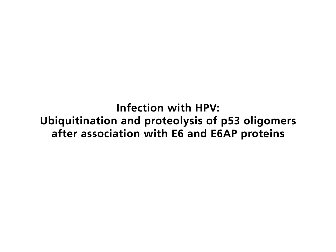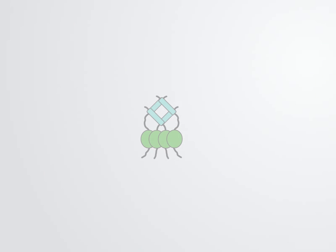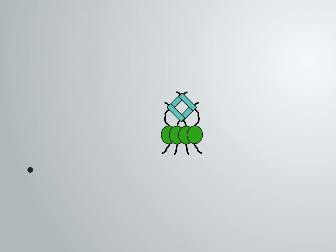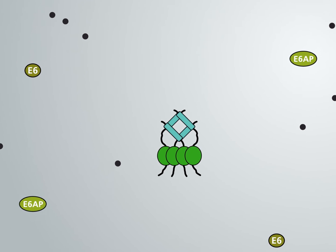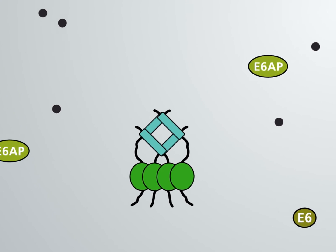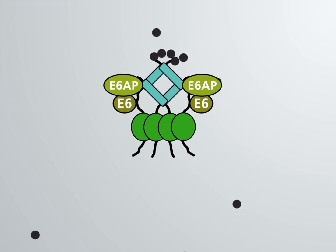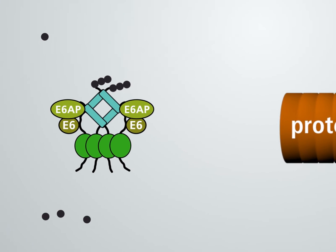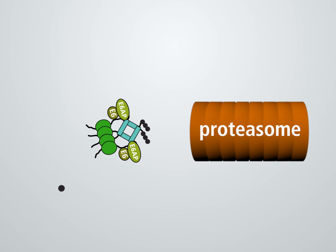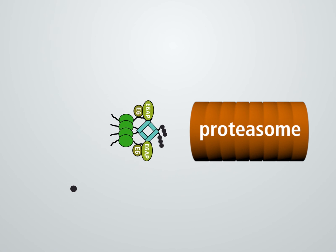Infection with human papillomaviruses. Some types of human papillomaviruses are causal agents in the formation of cervical carcinomas. The viral proteins E6 and E6-AP, a ubiquitin ligase, bind to P53. Both proteins mediate ubiquitination of P53. Ubiquitinated P53 is degraded in the proteasome.